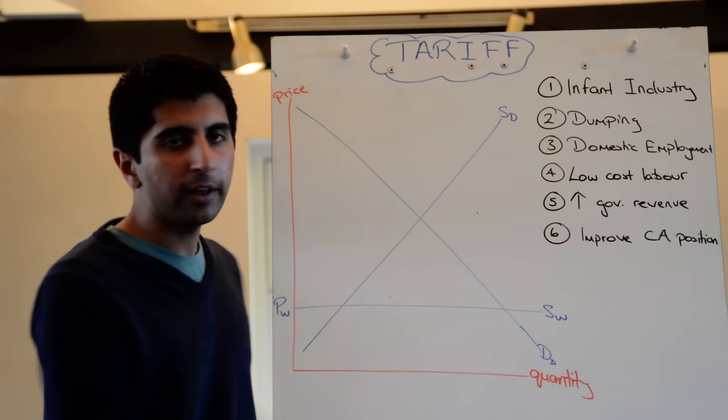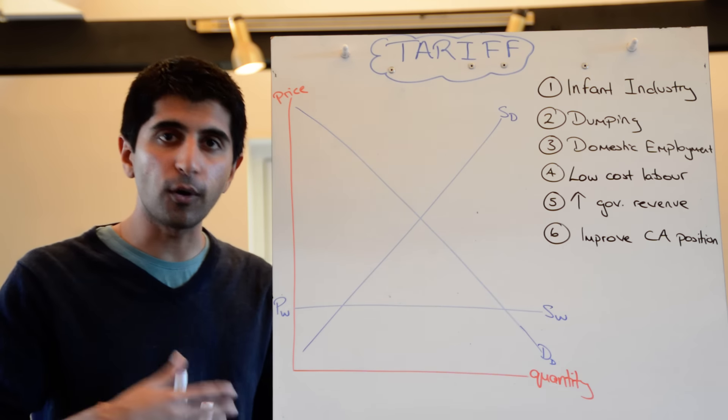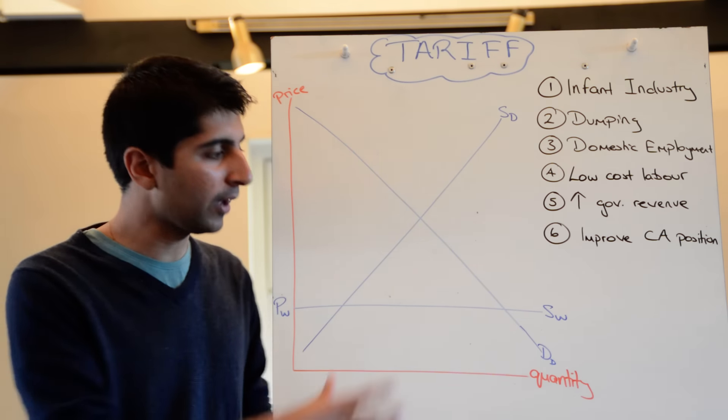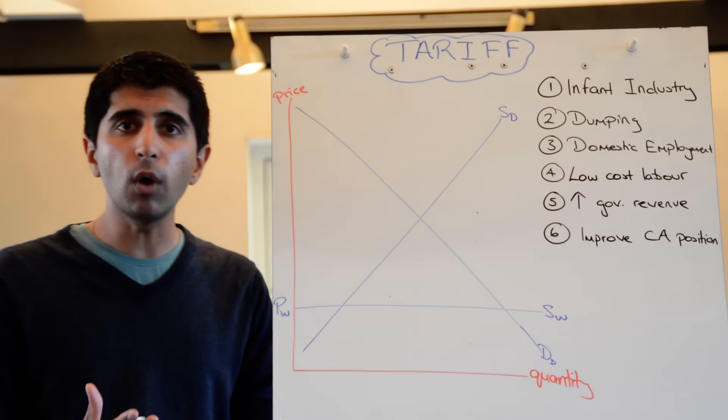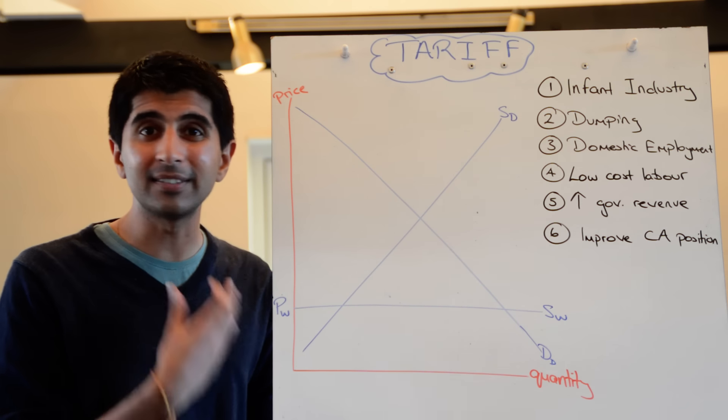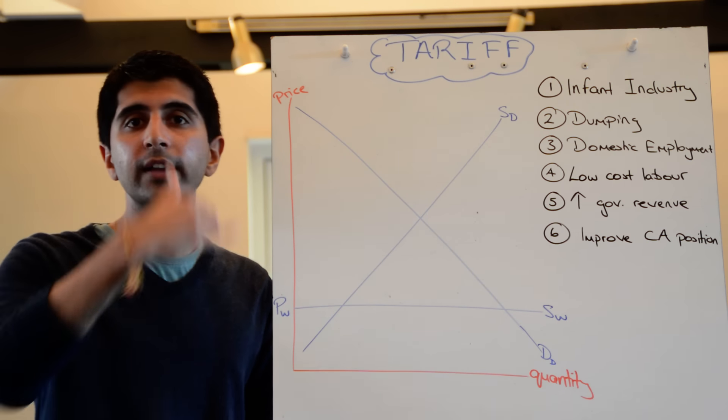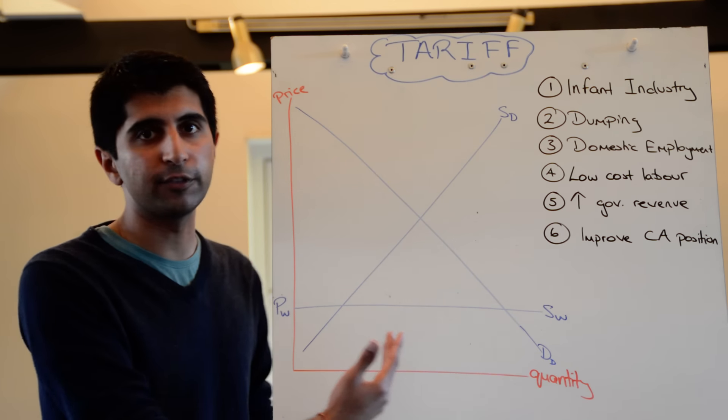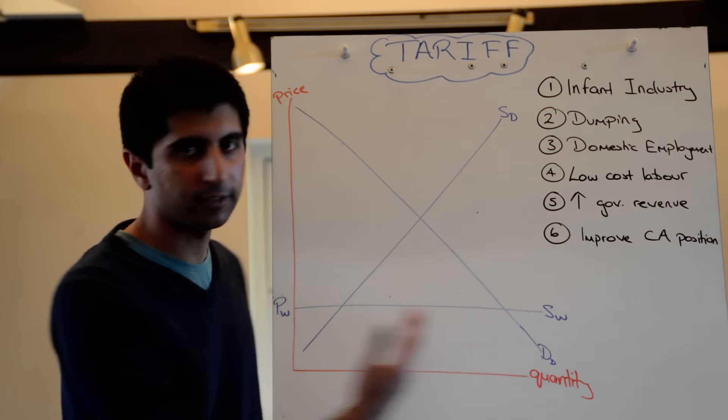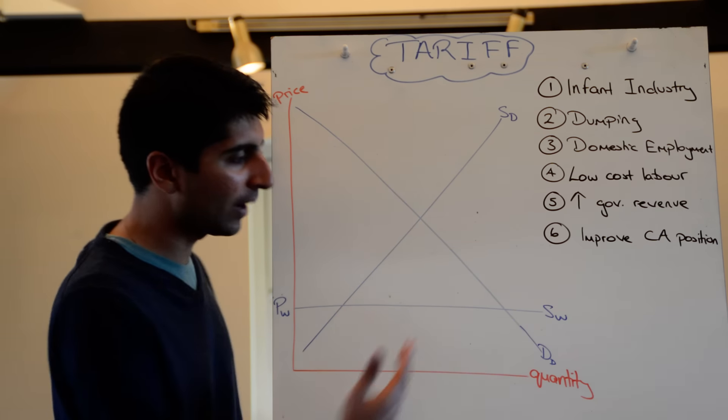It can charge a lower price than would be the case in the domestic market. And the supply curve is perfectly elastic, it's horizontal. Why? Because the levels of quantity that need to be supplied in just this domestic market, the rest of the world can happily supply those very low levels of quantity at the same price. Such is the ease at which the rest of the world can supply such quantities.